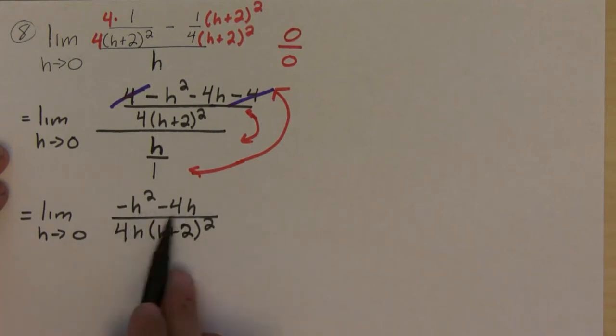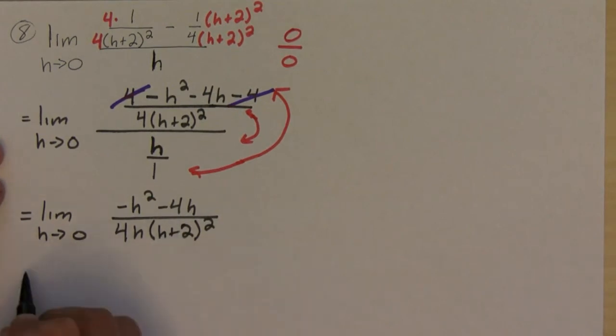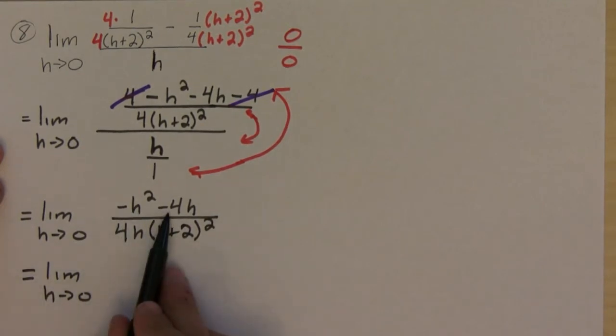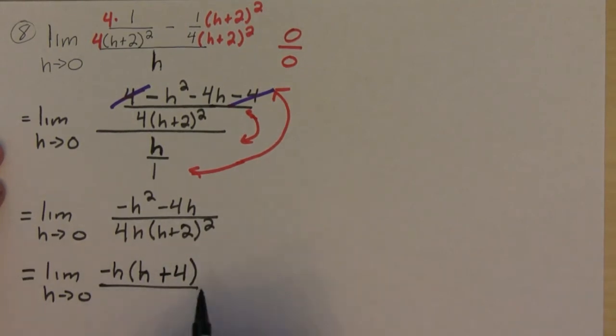Okay, and so notice if I try plugging in 0, I would still get an indeterminate form 0 over 0, so I still have more work to do. So notice that I can factor out an h on top here. If I factor out an h, I would get a negative, let's factor out a negative h, so then I would get an h minus, sorry, plus 4. You can factor out an h, but it just looks a little cleaner. And on the bottom, I'll just leave it how it is. It's already in factored form, and notice that the h's now cancel.